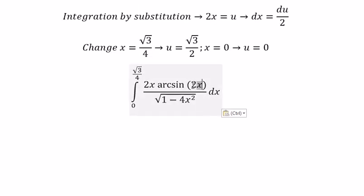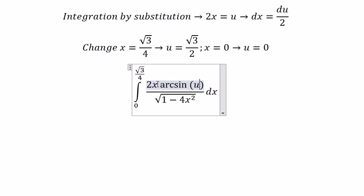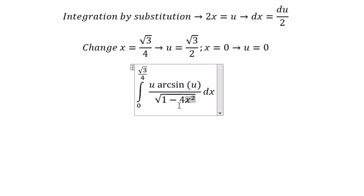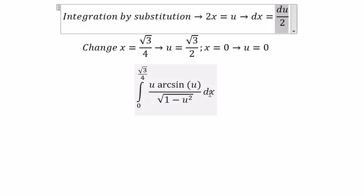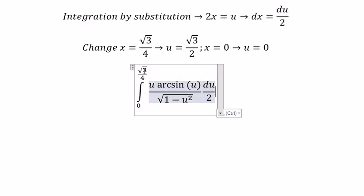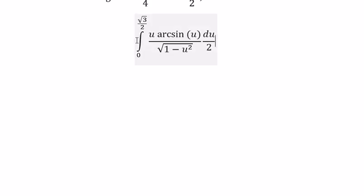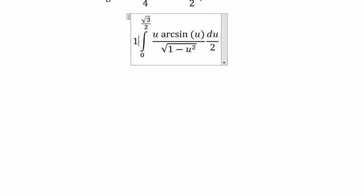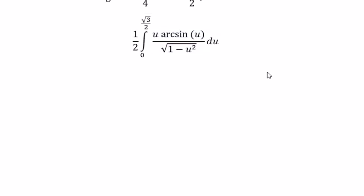So this one we change for u. This one we change for u squared. ds we change for this one. This one we change for number 2. So we move 1 over 2 in here.